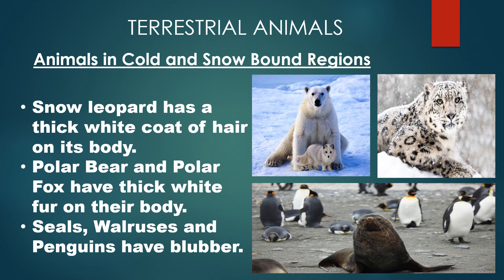Animals in cold and snow-bound regions: the snow leopard has a thick white coat of hair on its body. Similarly, polar bears and polar foxes have thick white fur that not only protects them from the severe cold but also makes them less visible against the white background - they blend into the environment, helping them approach prey without being noticed. Seals, walruses, and penguins have blubber - a thick layer of fat that keeps their body warm in freezing conditions.